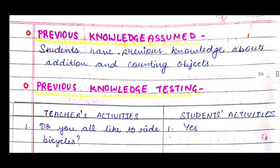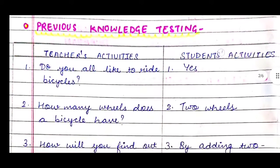Then we will come to the heading 'Previous Knowledge Assumed.' We will write the topic related to what previous knowledge is required. Students have previous knowledge about addition and counting objects, so they know this. Then we will test their previous knowledge.